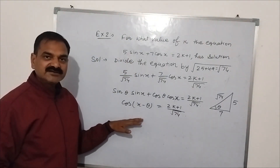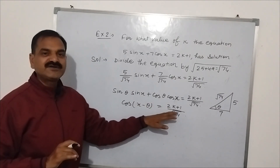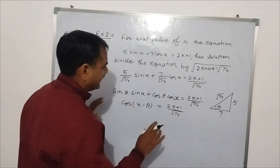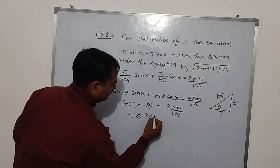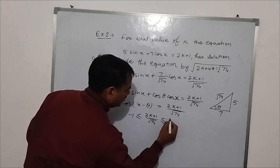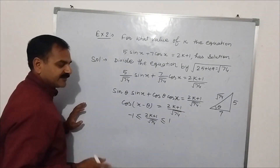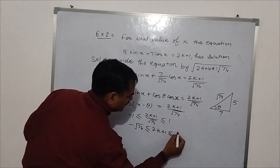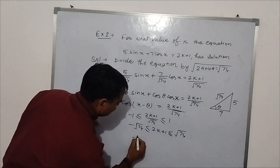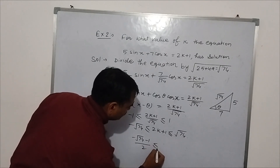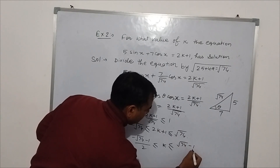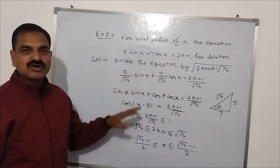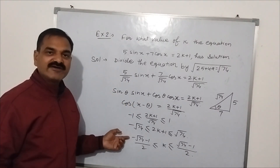This is the cosine ratio. The range of cosine is minus 1 to 1. So for the equation to have a solution, the value (2k+1)/√74 must lie between −1 and 1. That is: −1 ≤ (2k+1)/√74 ≤ 1. Multiplying through by √74: −√74 ≤ 2k+1 ≤ √74. Subtracting 1 and dividing by 2: (−√74 − 1)/2 ≤ k ≤ (√74 − 1)/2. So k must lie in this range for the equation to have a solution; otherwise, no solution.